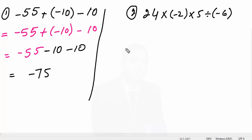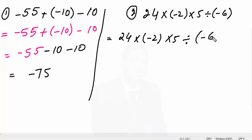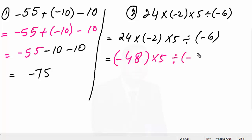Let's do question number 9. The expression is: 24 multiply minus 2, multiply 5, divided by minus 6. We will start solving from here. 24 multiplied by minus 2 — when a positive value is multiplied by a negative value, the sign becomes minus. 24 multiplied by 2 gives 48, so we get minus 48, then multiply 5, divided by minus 6.